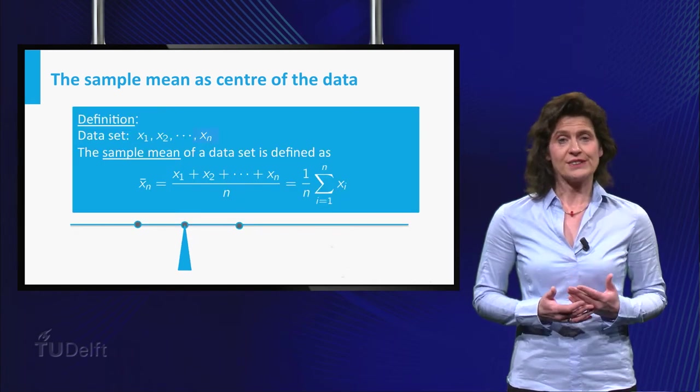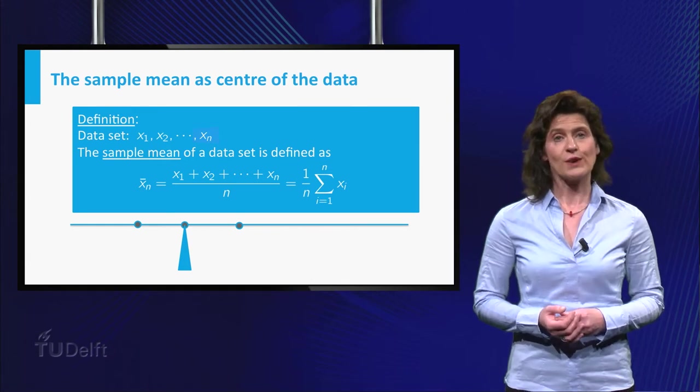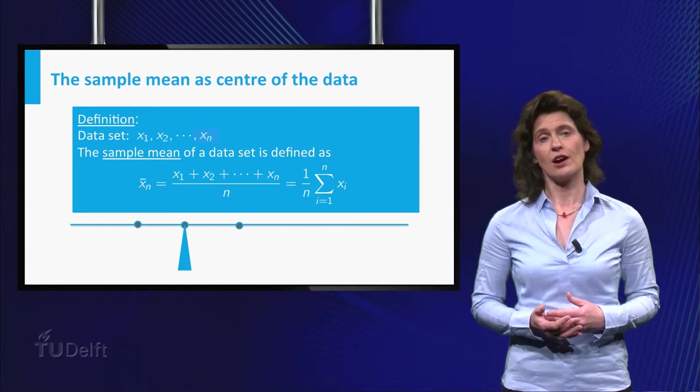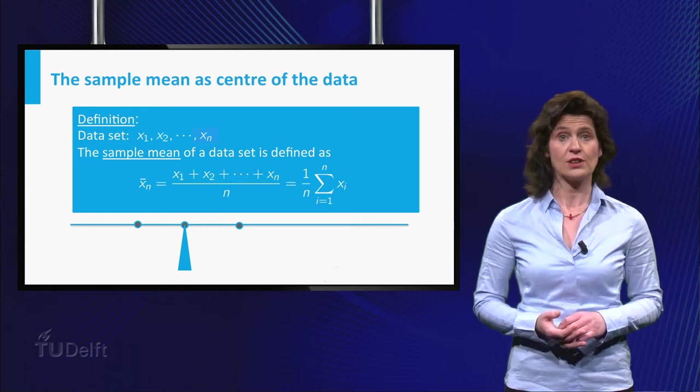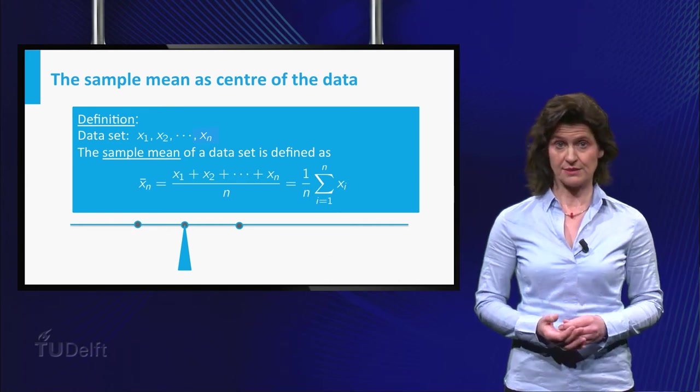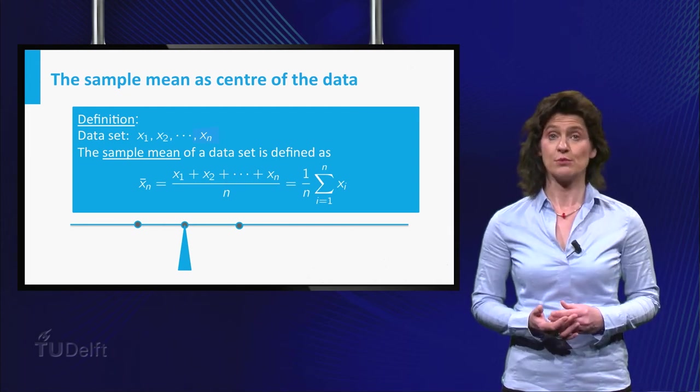If you wish to denote a dataset in general, so without specifying the points with numbers, you write it as x1, x2 up till xn. Here n is the number of values, usually called the sample size. Then the formula for the mean is given using the summation symbol sigma.